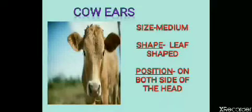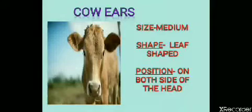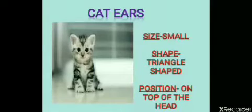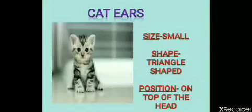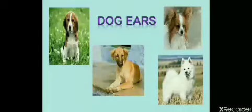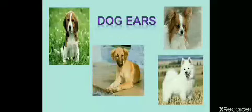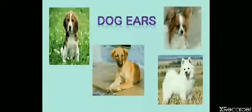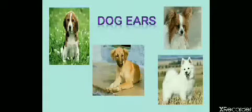Rabbit ears are located on the top of the head. This is a picture of a cow. A cow has medium sized ears. The shape of the cow ears is like a leaf and the position is on both sides of the head. This is a cat. Cats have small ears. The shape of the cat ears is like a triangle and they are located on the top of the head. In dogs, different breeds of dogs have different types of ears — some have broad ears, some have leaf-like ears and some have small triangle-shaped ears.